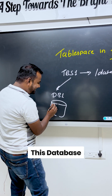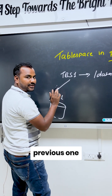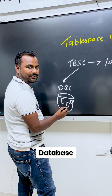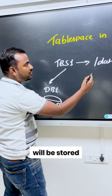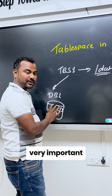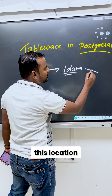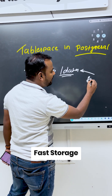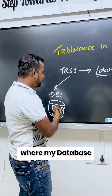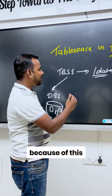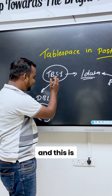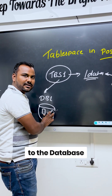This tablespace tbs1 is assigned to database db1. Since the database is pointing to tbs1, any objects created under this database will be stored at that physical location. These objects are very important, and this is why the tablespace concept determines where your database objects will be stored — because the tablespace is assigned to the database and points to that storage location.